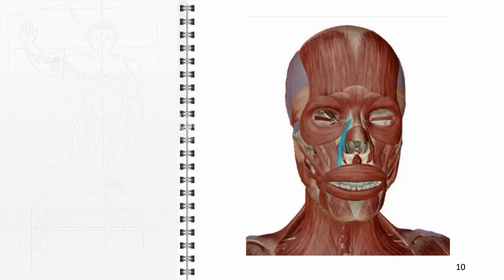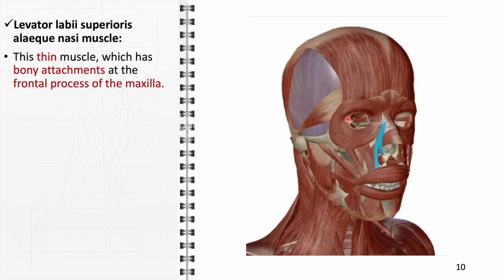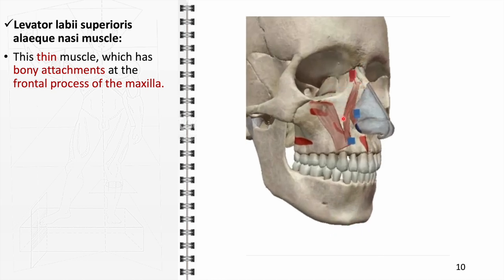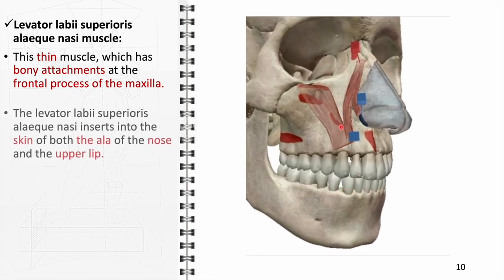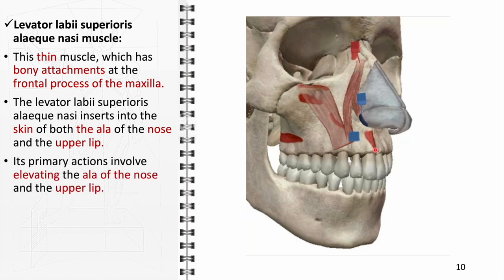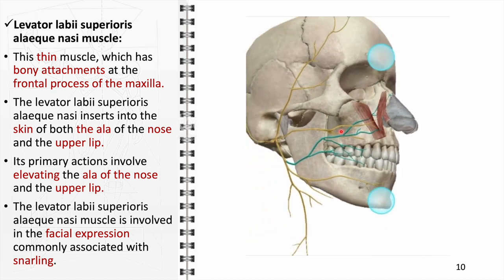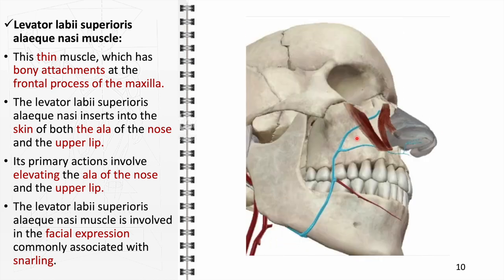The levator labii superioris alaeque nasi, a component of the nasal group, is a thin muscle with bony attachments at the frontal process of the maxilla, inserting into the skin of both the ala of the nose and the upper lip. It primarily functions to elevate the ala of the nose and the upper lip, playing a critical role in the facial expression associated with snarling. It receives innervation from the zygomatic branch of the facial nerve and blood supply from the facial artery and the infraorbital branch of the maxillary artery.